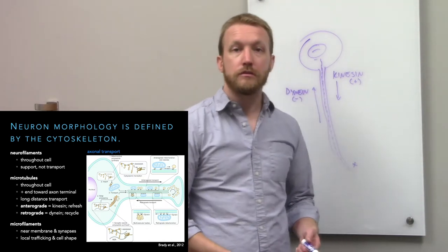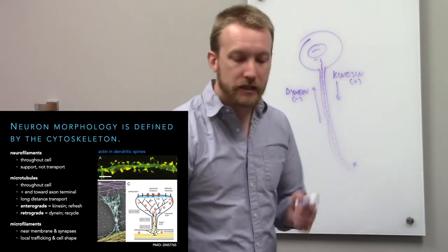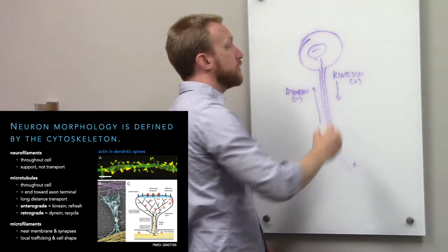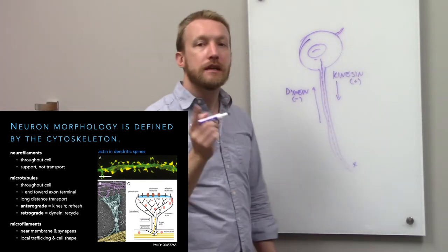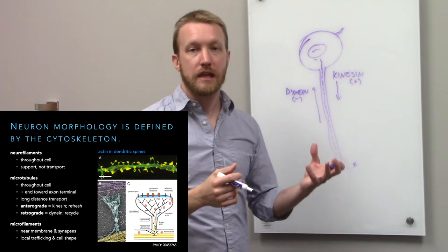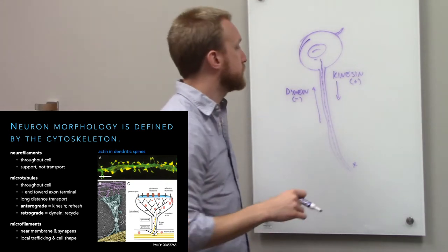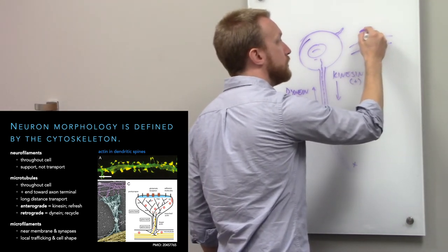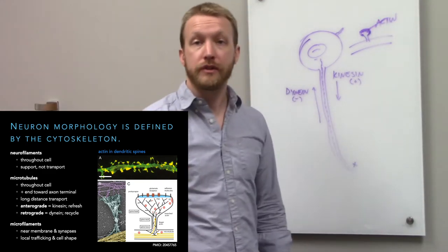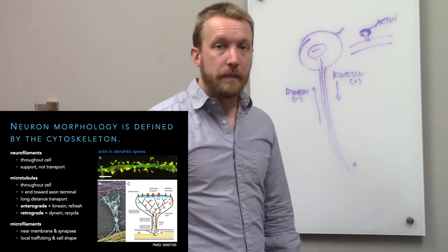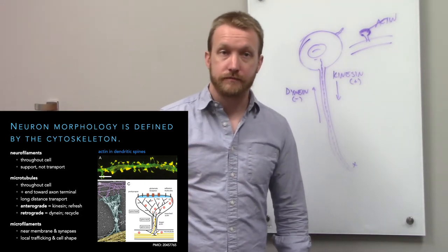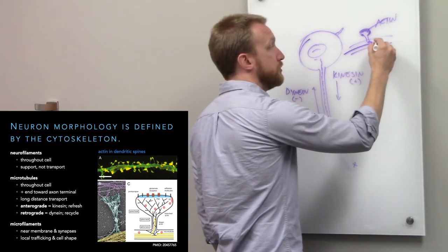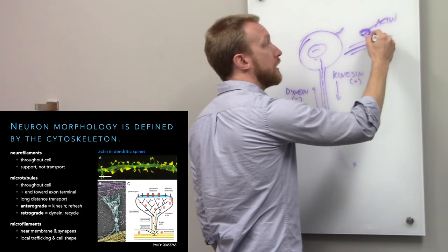Right at the periphery of the cell we have actin filaments, which fill up those dendritic spines. Actin is found all along the periphery and gives the cell its shape. If the cell wants to stick out a little extension, it does that with actin, then later fills in microtubules to make it stable. Actin is the more dynamic cytoskeletal filament. The heads of dendritic spines are filled with actin so they can grow, strengthen, or shrink. Motor proteins called myosin run along actin filaments for more local transport.